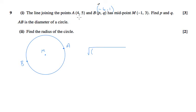I can do minus 1, take away 4 squared, plus 3, take away 5 squared. That's 25 plus 4, so that's root 29.